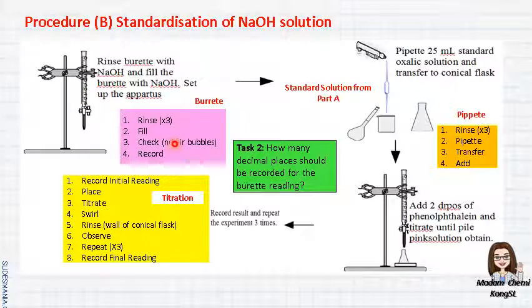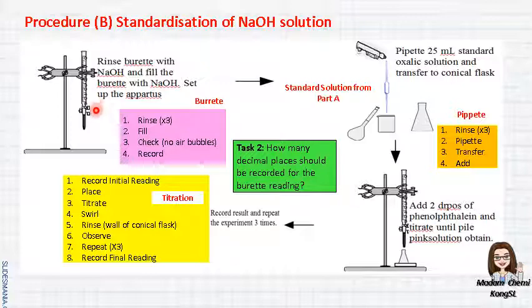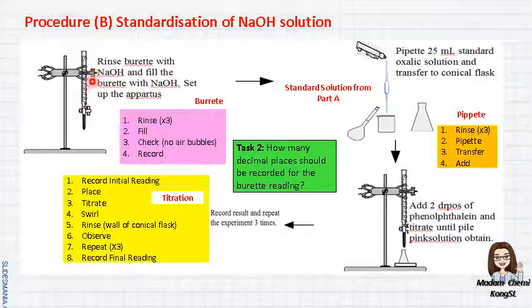Then you have to check — is there any air bubbles? If yes, you have to discard all the air bubbles before you start. Before you start to record, make sure that you know how to read the scale of the burette. The initial reading does not necessarily start with 0.00 — it can be 0.10, 0.20, 1.25, and so on. Not necessarily 0.00.